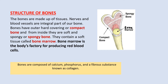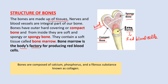Structure of bone. The bones are made up of tissues. The outer covering of bone is hard, so it is called compact bone. From the inside, the bones are spongy and soft, so they are called spongy bones. Bones also contain soft tissue called bone marrow, which produces red blood cells — so it is also called the body's factory for producing red blood cells.